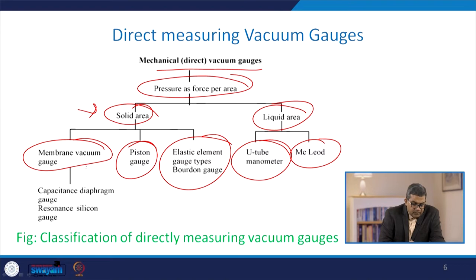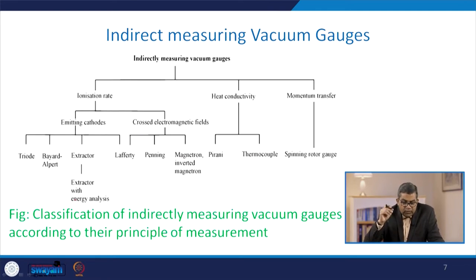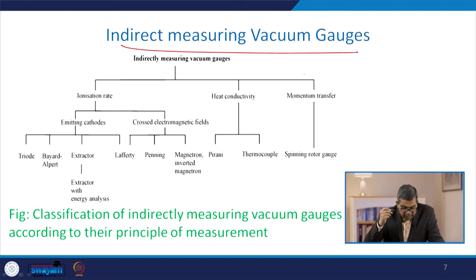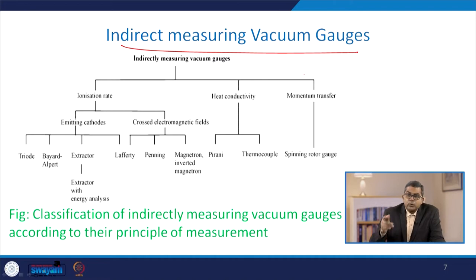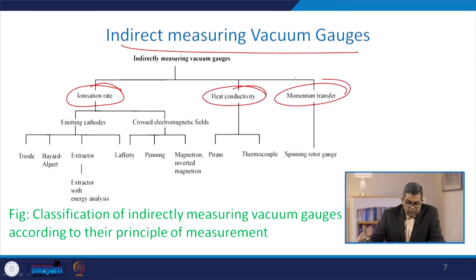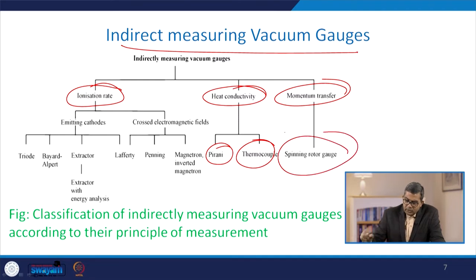Indirect measuring vacuum gauges are classified according to their principle of measurement into three categories: ionization rate, heat conductivity, and momentum transfer. Heat conductivity is further subdivided into the Pirani gauge and the thermocouple gauge, whereas momentum transfer refers to the spinning rotor gauge.